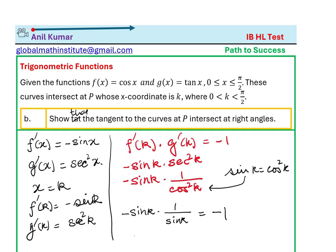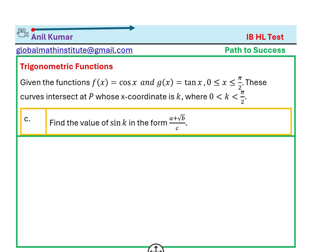So we have done that. Now the last part here is to find the solution: find the value of sin k in this form (a + √b)/c. So let's again begin with what we proved in part a.